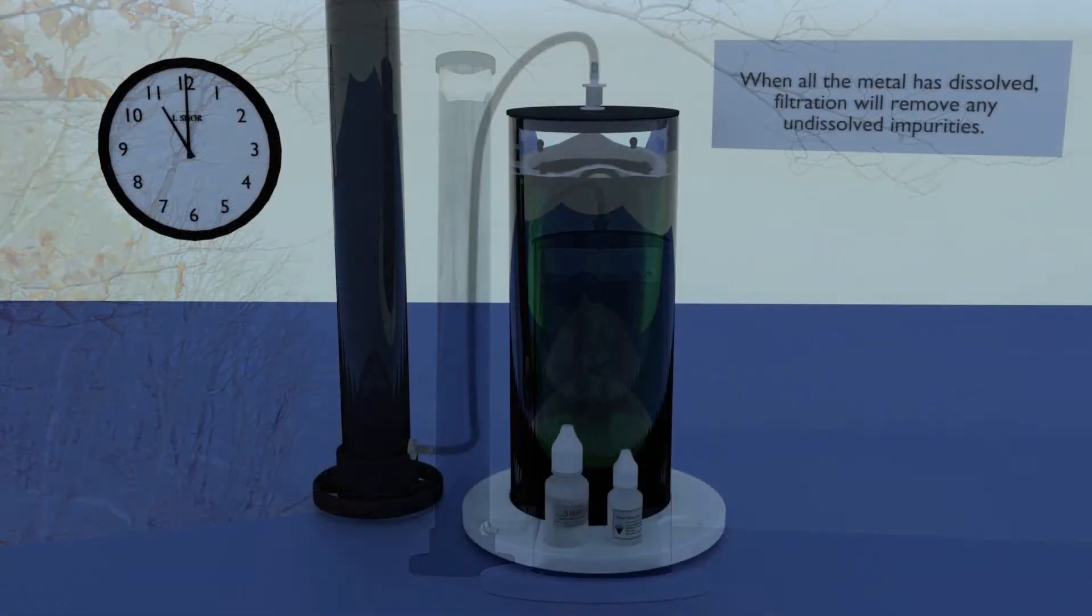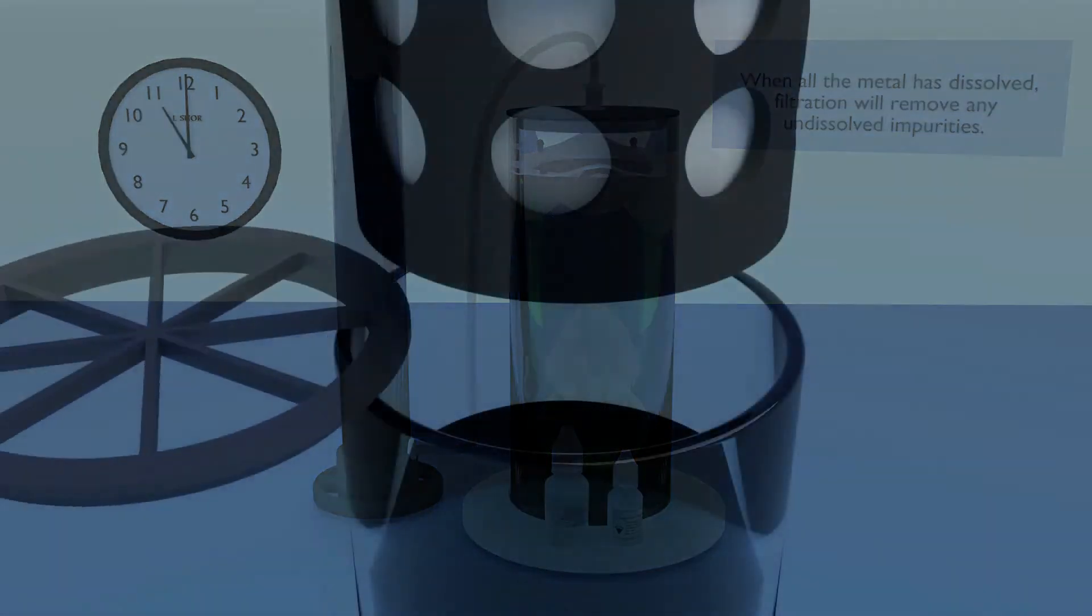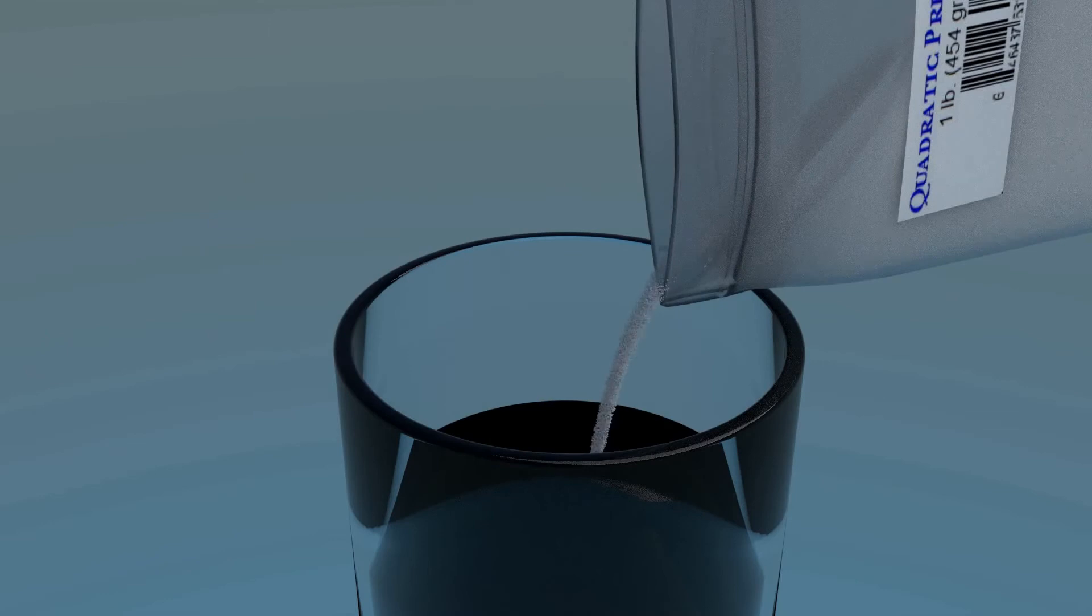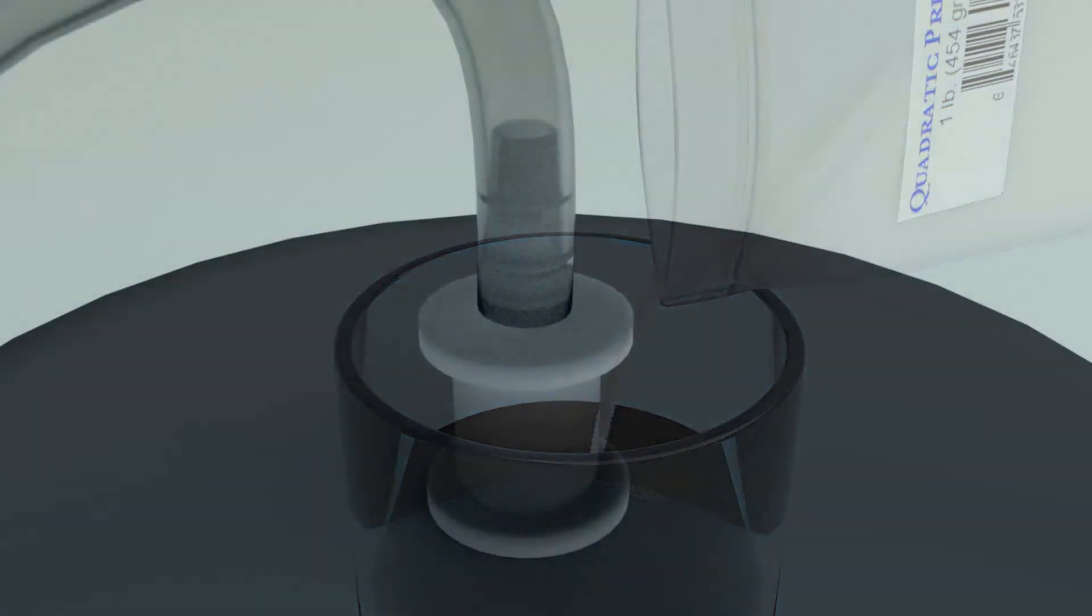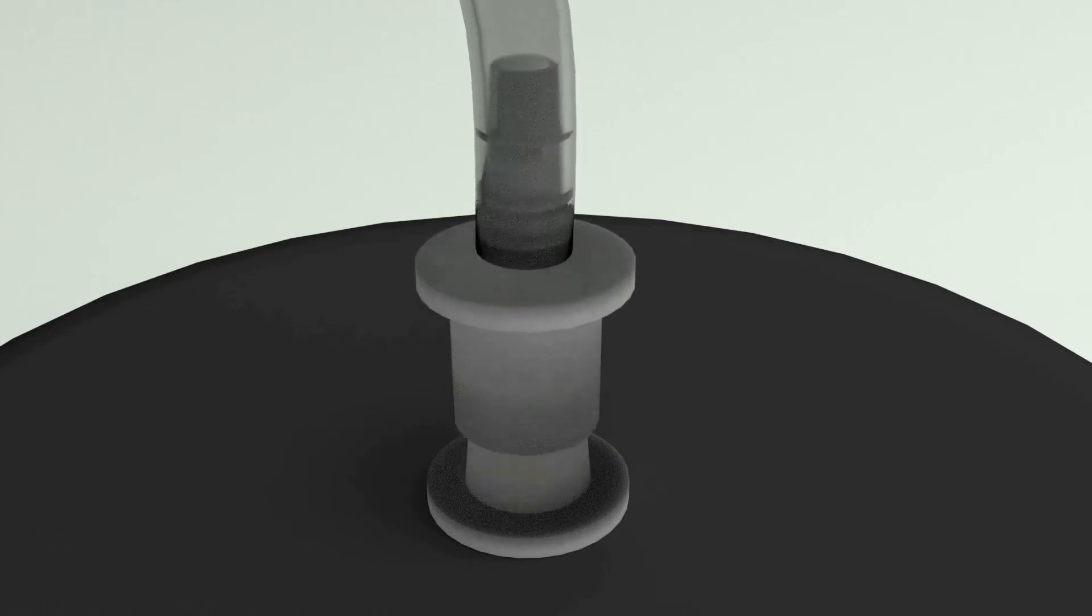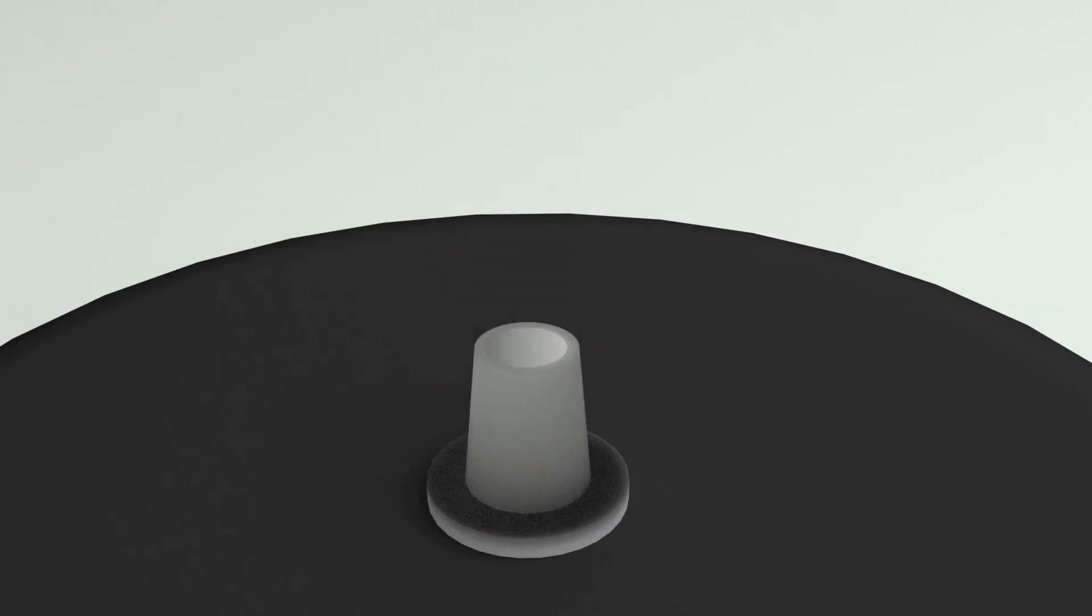When the metal has all dissolved, it's time to filter out any undissolved solids from the solution, and then add quadratic to precipitate particles of gold that should have a purity of at least 99.95%. Since we will be bringing the reaction chamber outside, let's first disconnect the quick connect from the chamber.